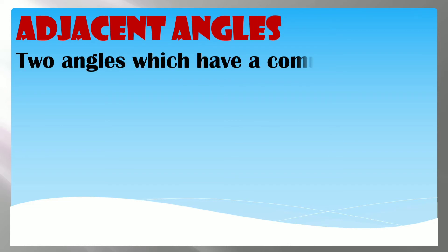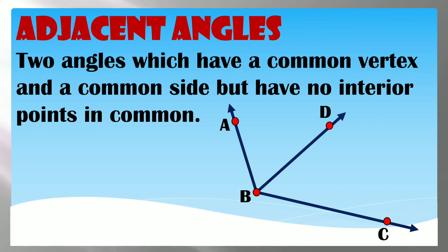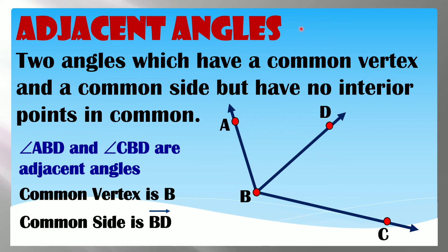Adjacent Angles are two angles which have a common vertex and a common side but have no interior points in common. In this example, Angle ABD and Angle CBD are adjacent angles. Their common vertex is B and their common side is BD. They share a common side but have no interior points in common.